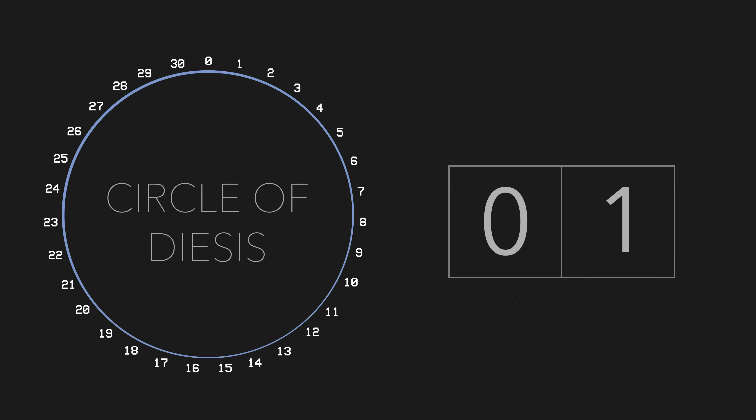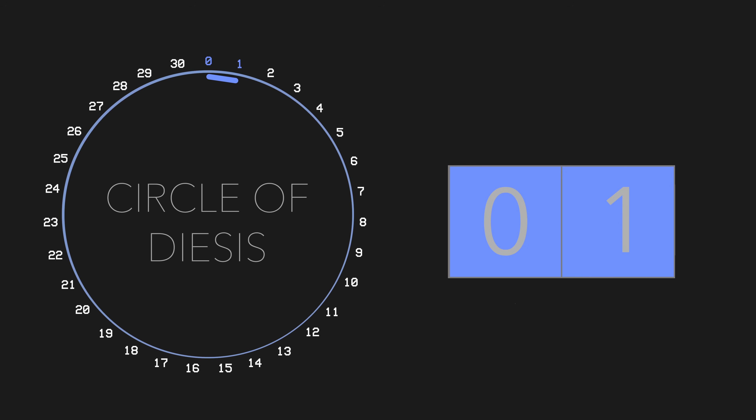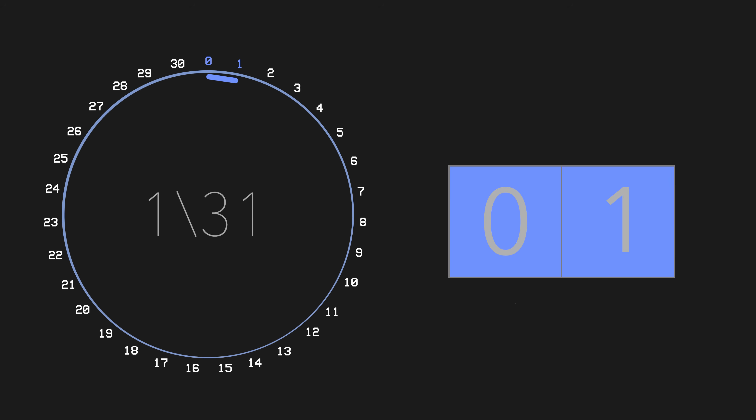Why do I call it the circle of Diesis? Well, it has to do with this tiny little step: 1 out of 31. This is the smallest step we can get in 31 EDO. This itty-bitty little micro-interval is called the Diesis.